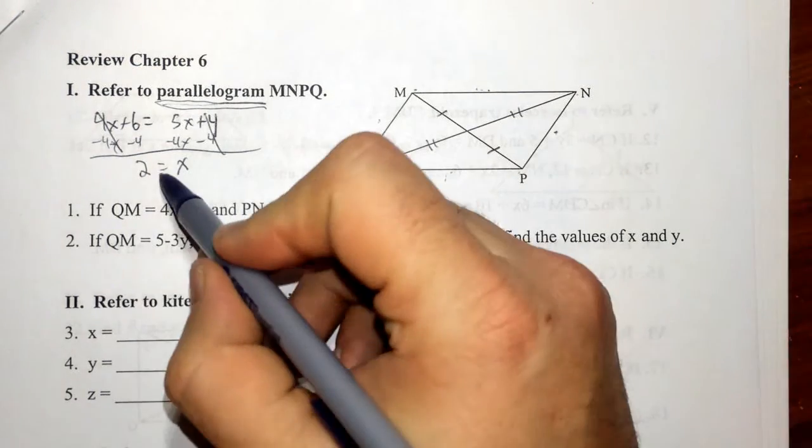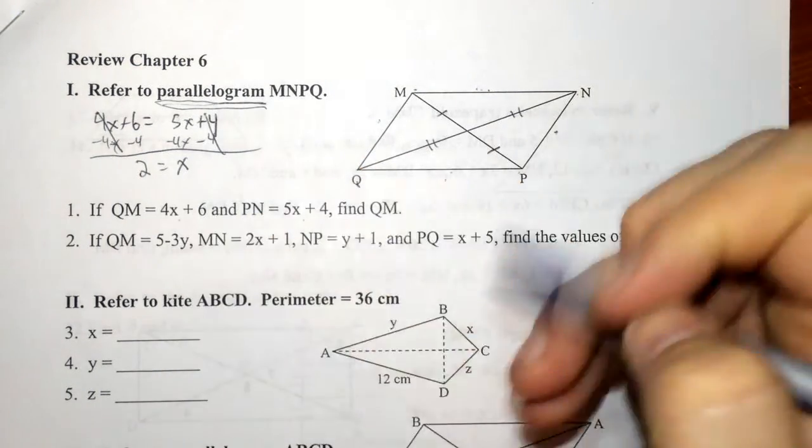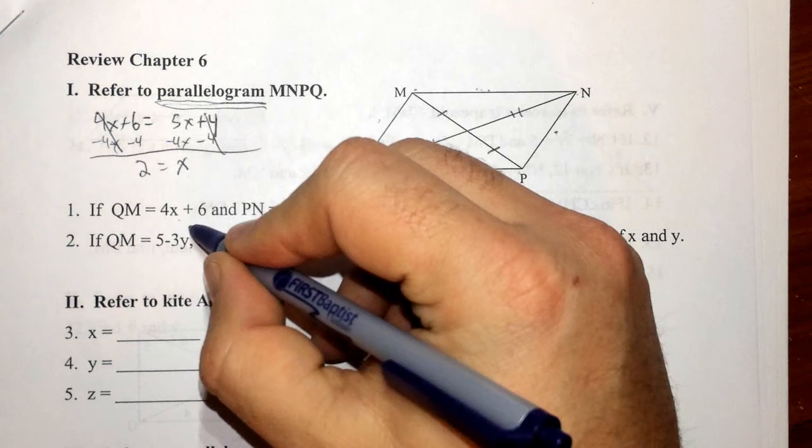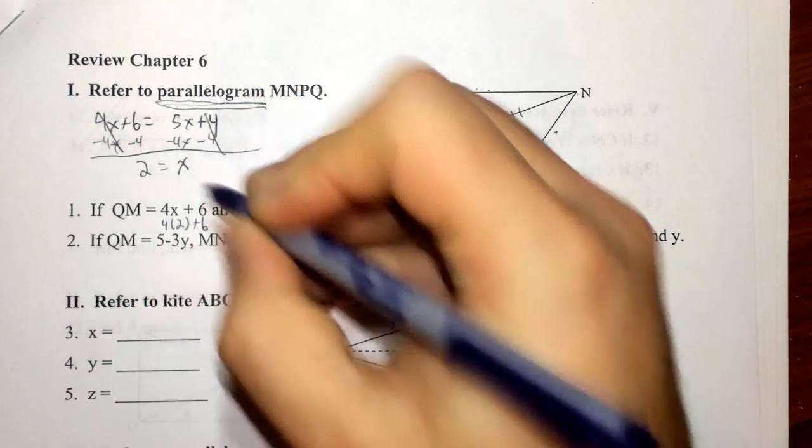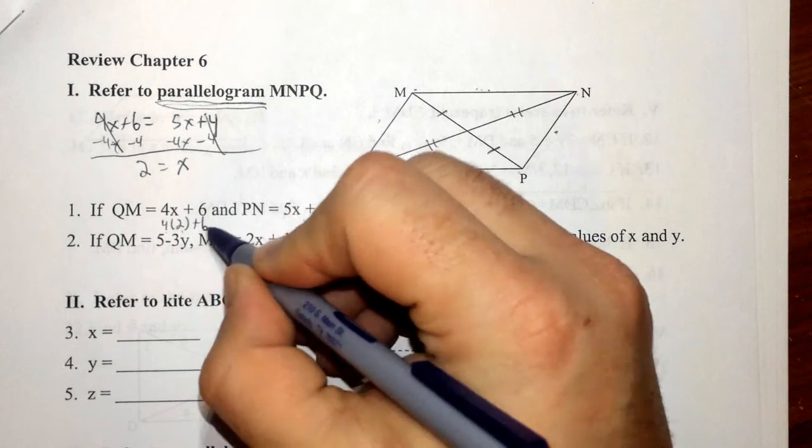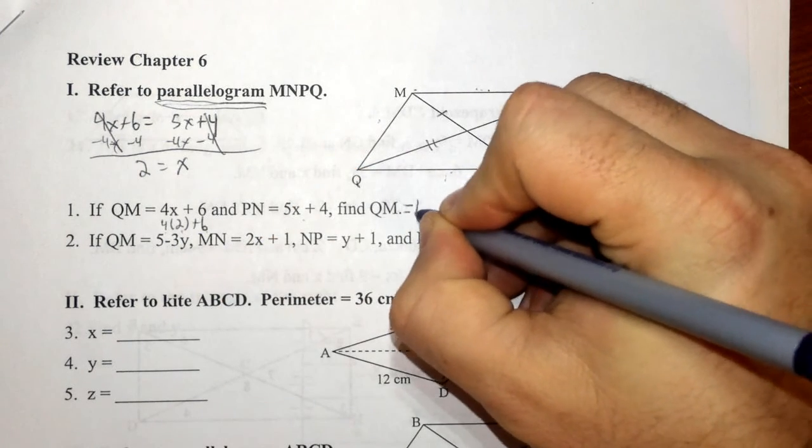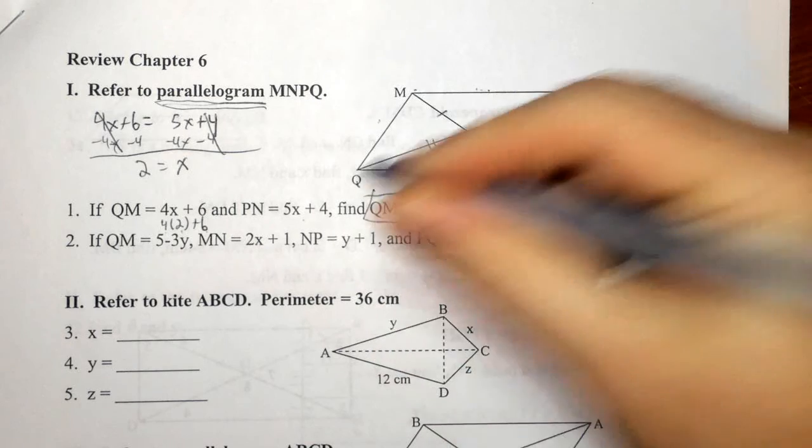Now, don't fall for the temptation to say I've got X equals, I'm done. We've got to go back over here and substitute in to do 4 times 2 plus 6. 4 times 2 is 8, plus 6 is 14. So, QM equals 14 is my final answer.